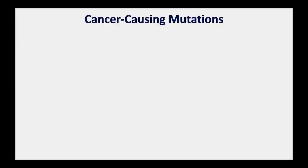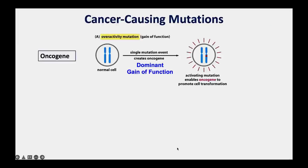Let me show this diagrammatically. A circle is a cell, with two blue lines representing two chromosomes—and we have two copies of every gene. For oncogenes, remember they're like the gas pedal. We only need one gas pedal stuck down to cause the problem. So if there is a mutation that activates one copy of an oncogene when it shouldn't be on, that's enough to start moving the cell into the tumor progression pathway.